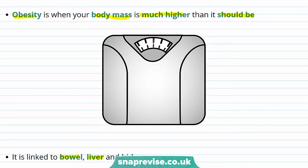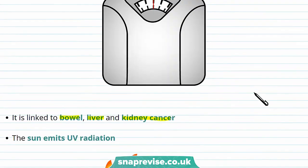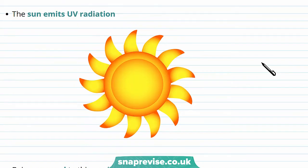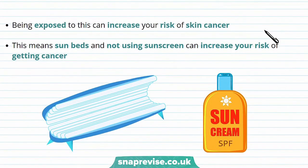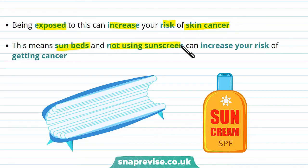Another risk factor is UV radiation. The sun emits UV radiation, so when you're exposed to sunlight you're also exposed to UV radiation. Being exposed to this can increase your risk of skin cancer. Using sunbeds and not using sunscreen increases your exposure to UV radiation, and that means it can increase your risk of getting cancer.